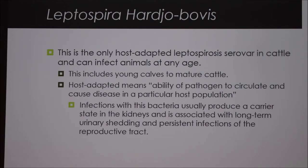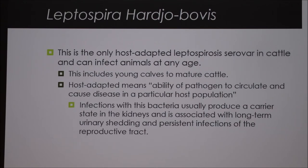Leptospira harjo bovis is the only host-adapted leptospirosis serovar in cattle and can infect animals at any age, from young calves to mature cattle. Host-adapted means the ability of a pathogen to circulate and cause disease in a particular host population. Infections with this bacteria usually produce a carrier state in the kidneys and are associated with long-term urinary shedding and persistent infections of the reproductive tract.